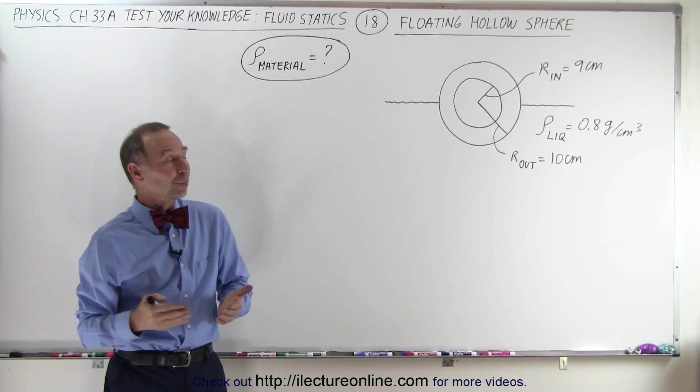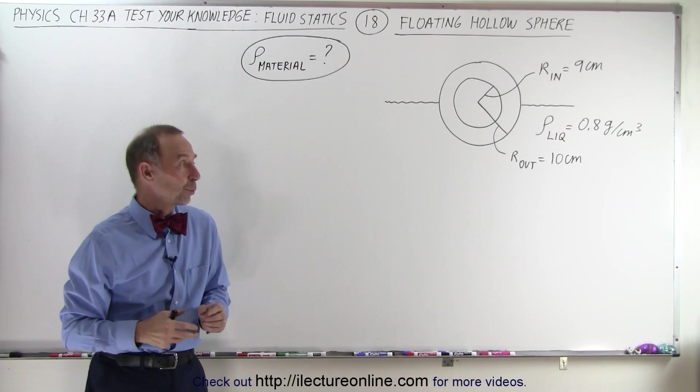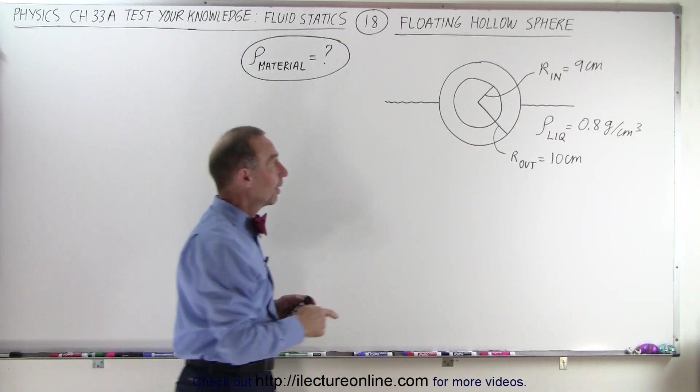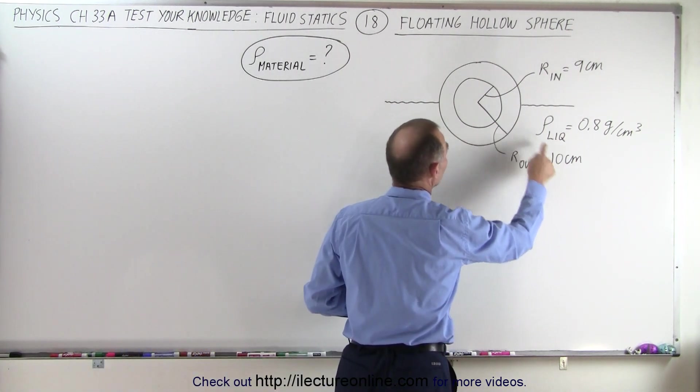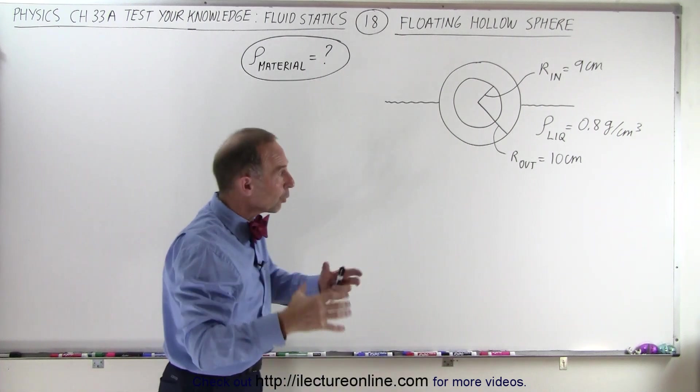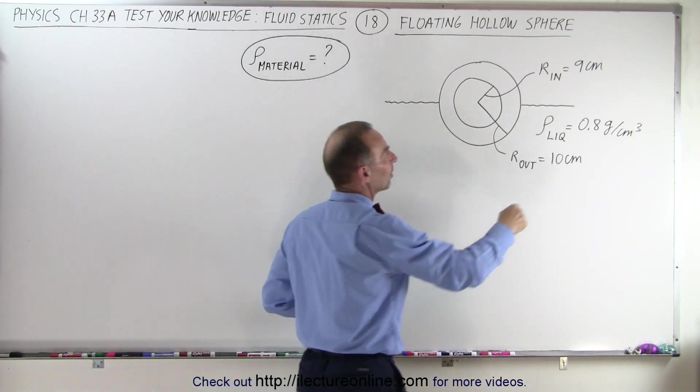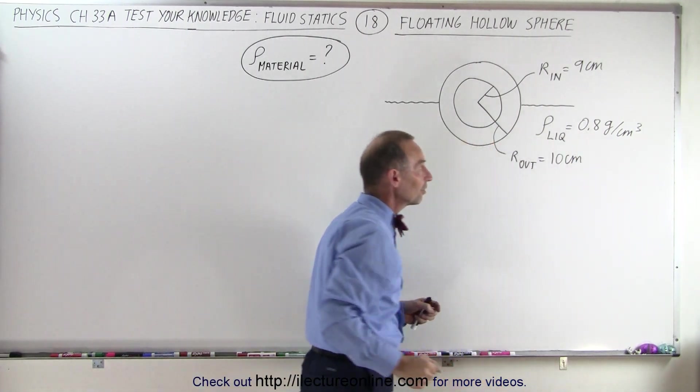Welcome to my lecture online. Our next problem is kind of an interesting one. We have a hollow sphere at a radius 10 centimeters, inner radius 9 centimeters, and it's floating in a liquid that has a density that's 80% the density of water.